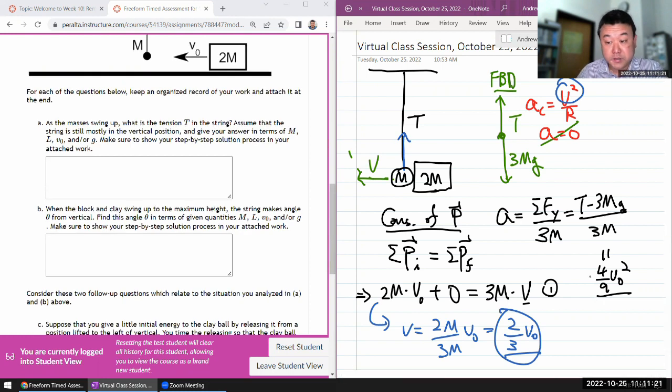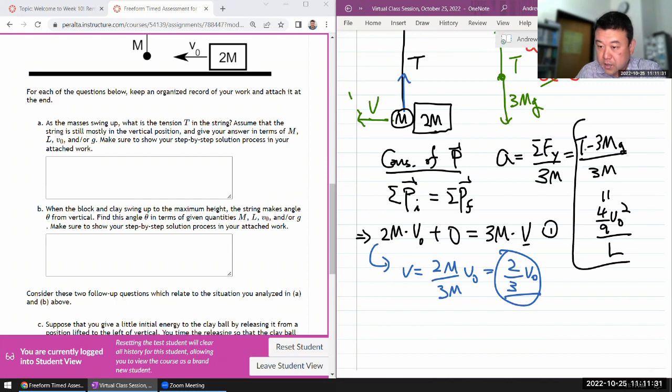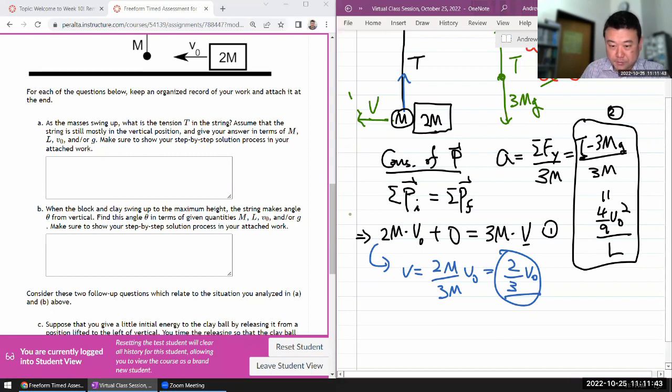I have one equation, one unknown. I think I can just solve for it. It's fairly simple. With the conservation laws, a lot of the questions, once you know what the right thing to do is, then the process of finding the answers is often fairly simple. So V equals 2 thirds of V naught.